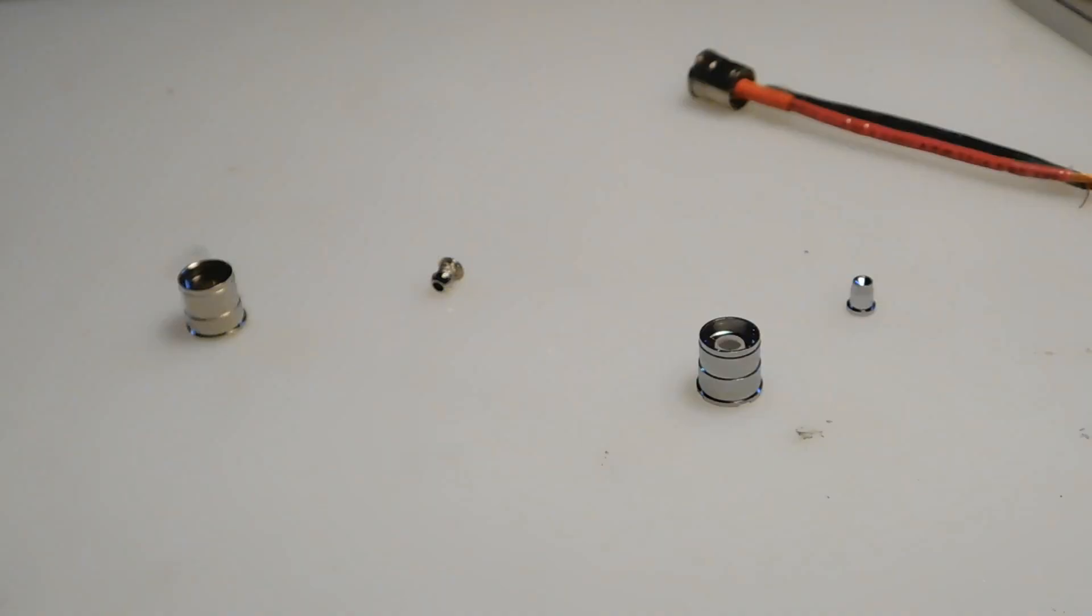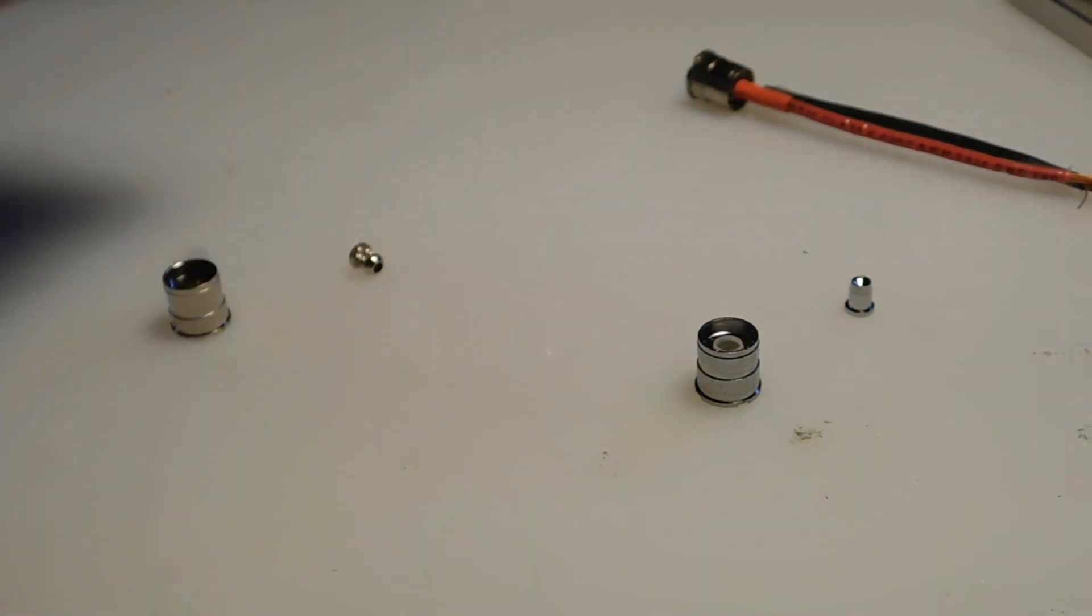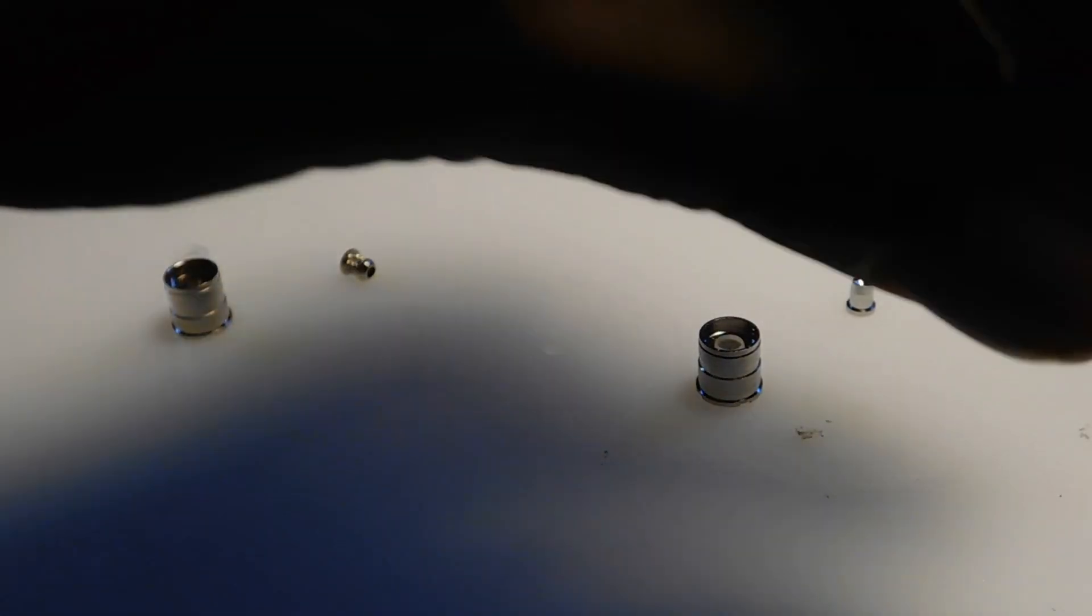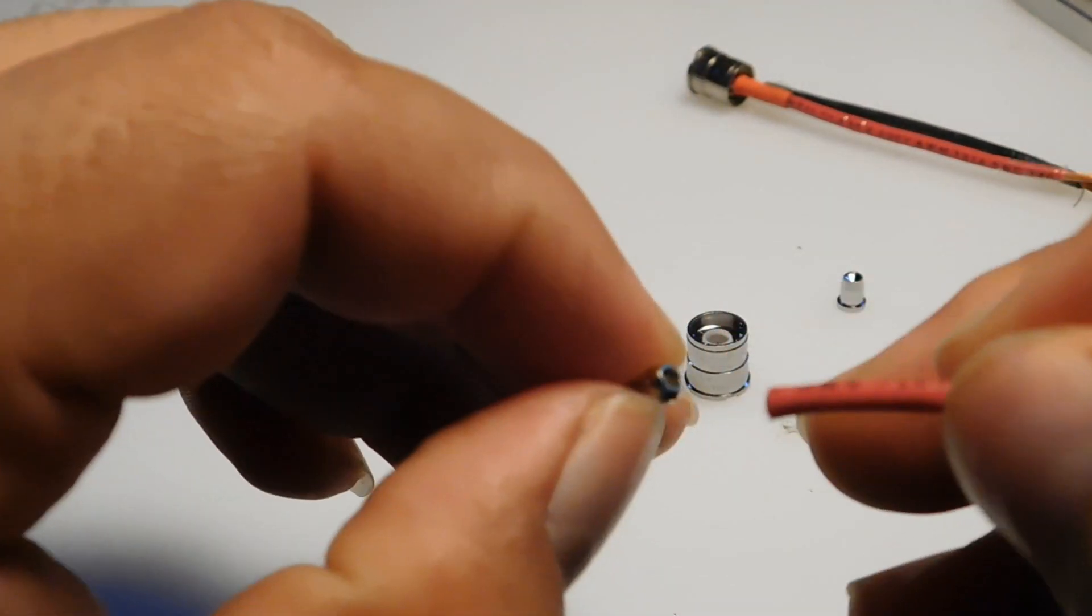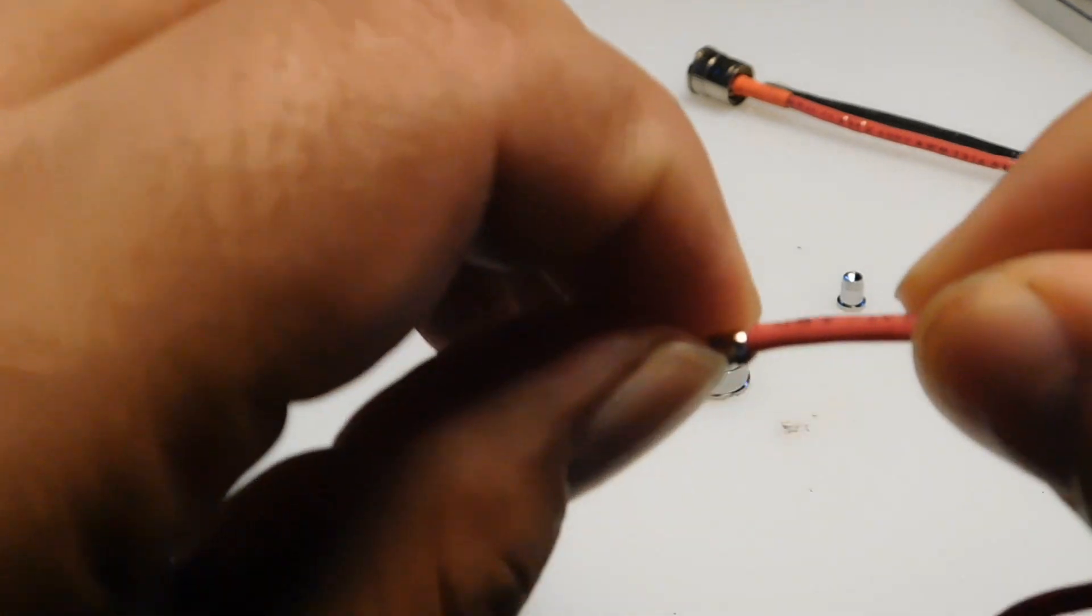So what you have to do is easy and quick. Let's say this is the standard wire you're going to solder. You're going to solder your wire in here, this one first.